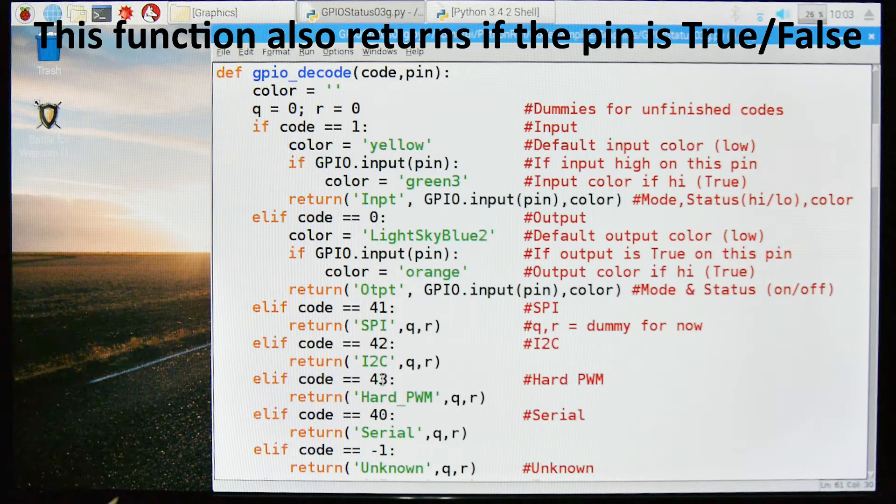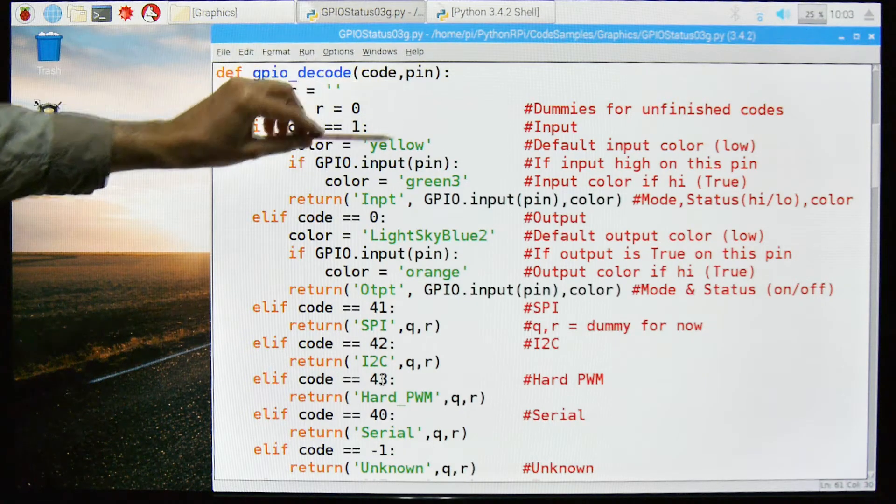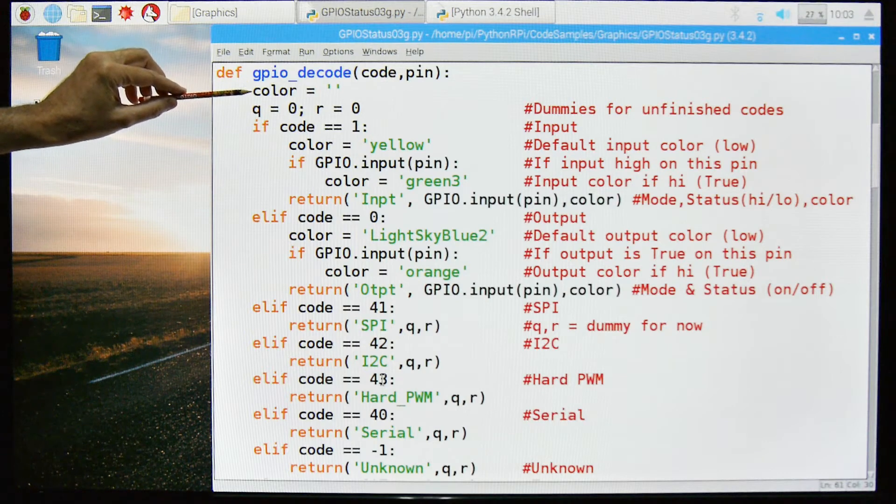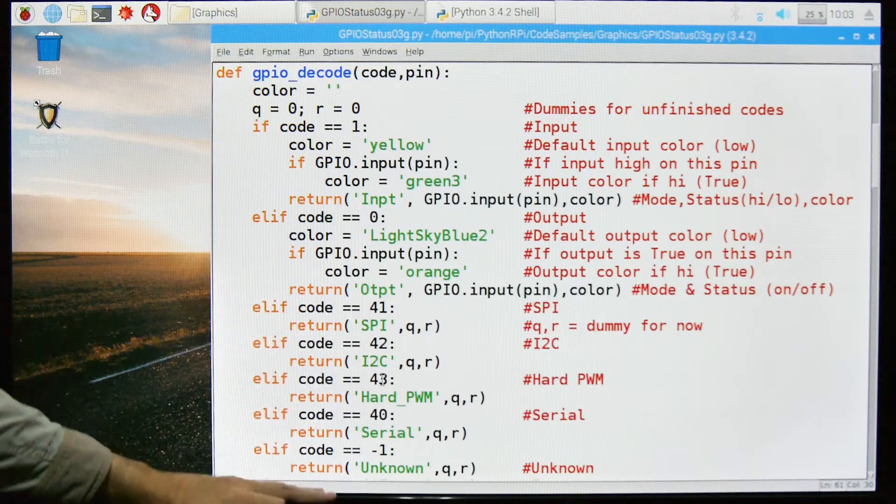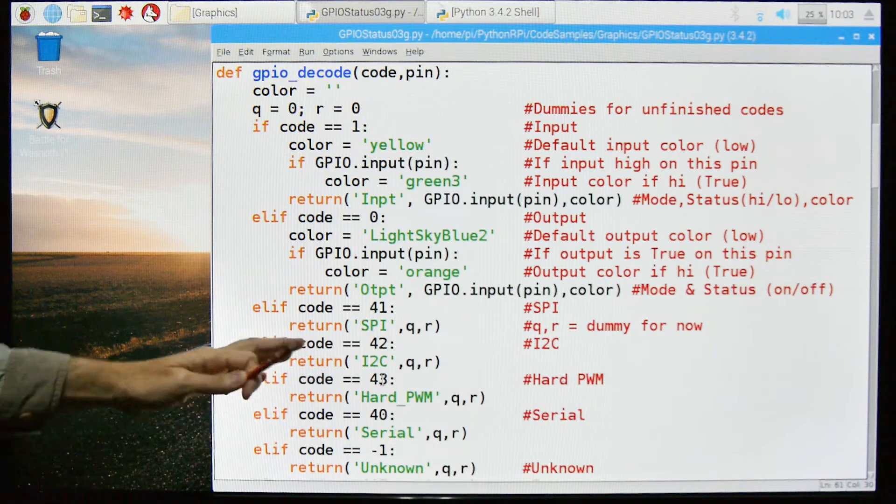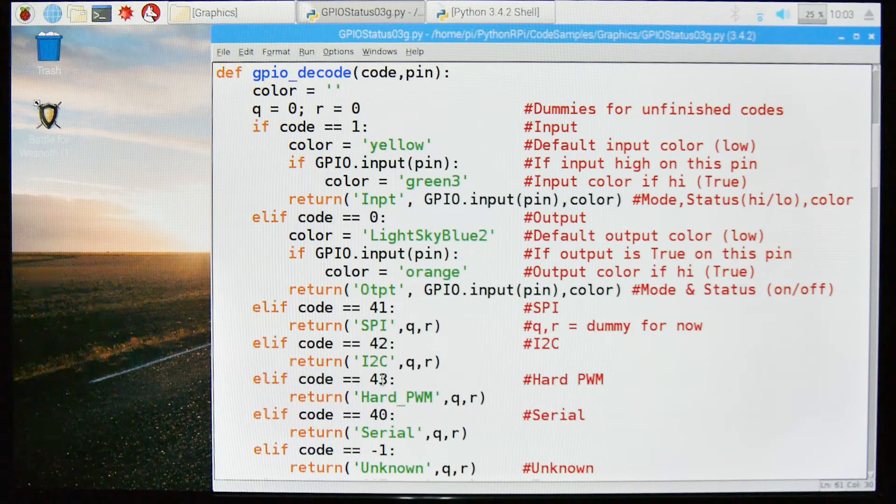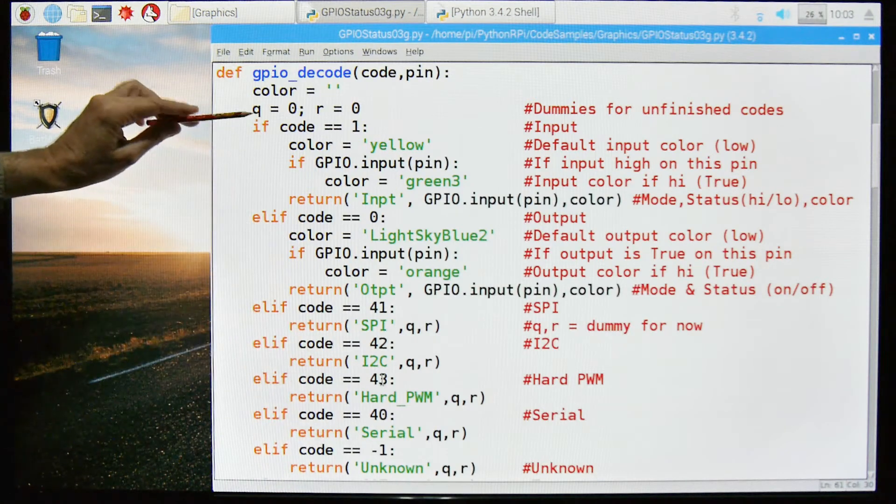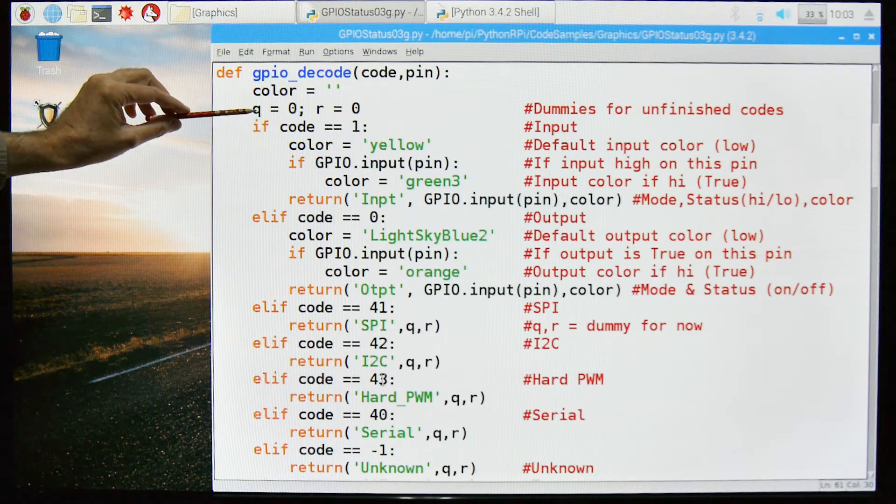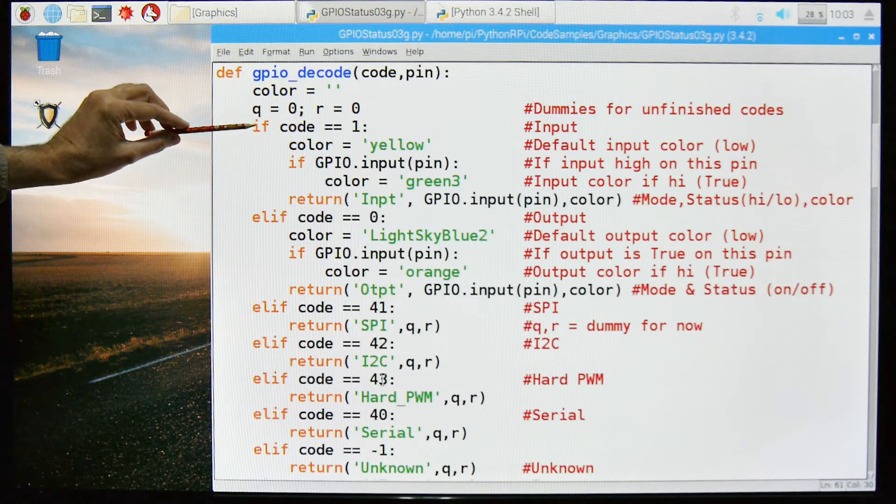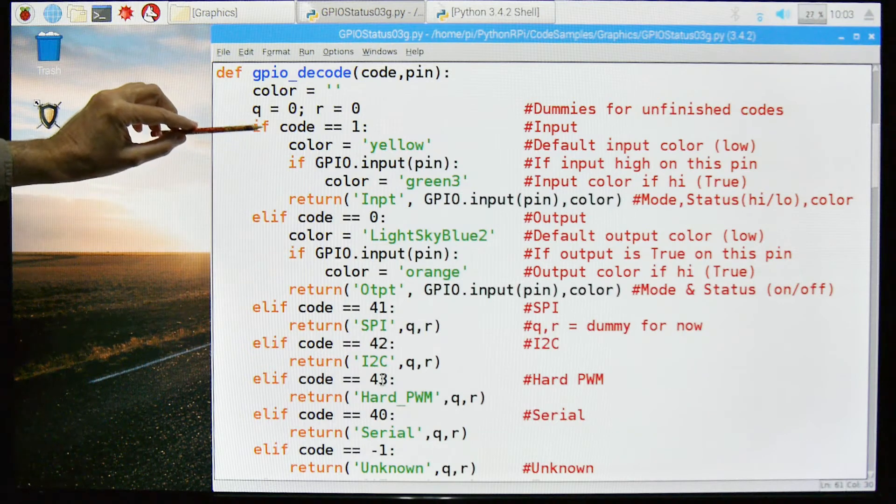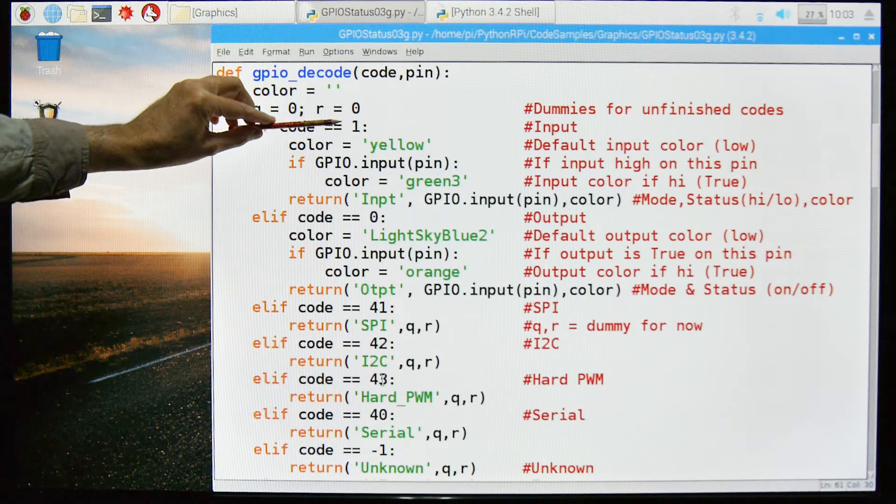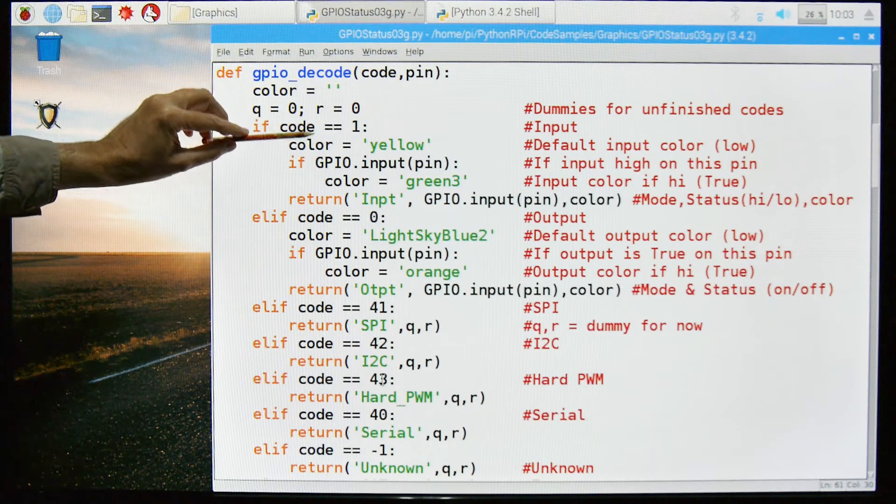So we get the code and we get the PIN. The color is set to blank. These are two dummy variables because I haven't finished all of these others. I don't use SPI and I2C very much so I haven't tested those and haven't filled them out. But the first part here, these are dummy variables. The first part here is for input PINs and output PINs. So if the code that's returned back is a 1, we know it's an input PIN. I'm going to set the default color to yellow. If there's power on the PIN, I'm going to set it to green.